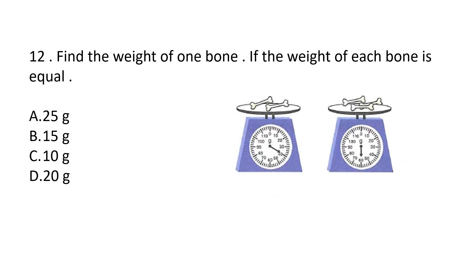Question number 12. Find the weight of one bone, if the weight of each bone is equal. In this weighing machine there are 2 bones and the weight is 40 grams. In another weighing machine there are 3 bones and the weight is 60 grams. So the weight of one bone is 40 divided by 2, that is 20 grams. The answer is option D.